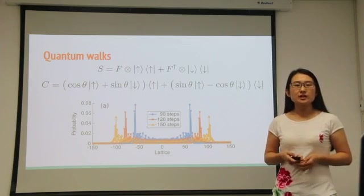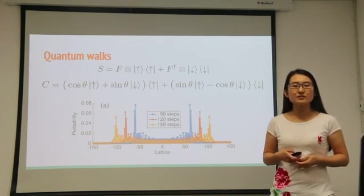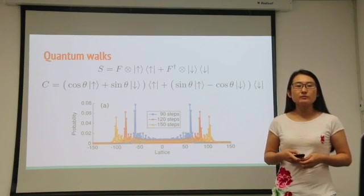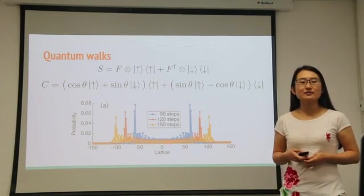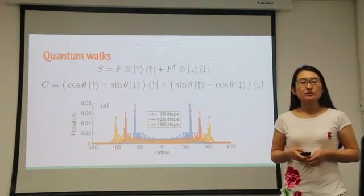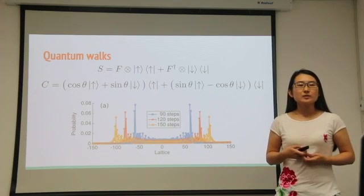Typically, this distribution has two distinct peaks propagating in opposite directions and a residual probability between the peaks. The height of the two peaks keeps decreasing, and the width of the individual peaks keeps increasing with time.